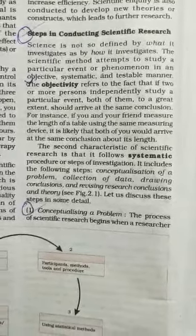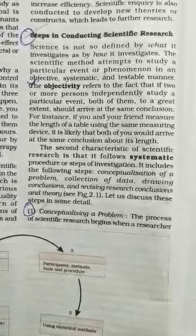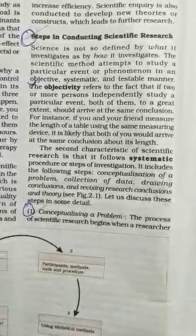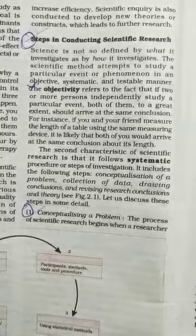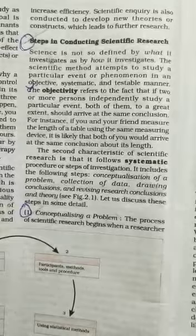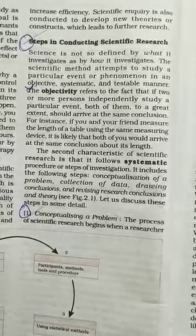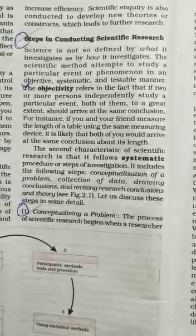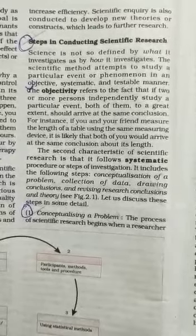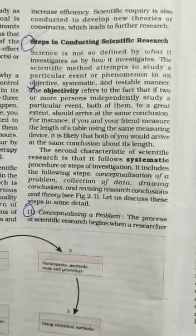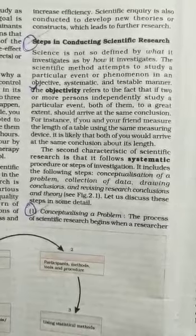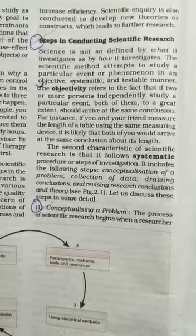Objectivity refers to the fact that if two or more persons independently study a particular event, both of them to a great extent should arrive at the same conclusion. For example, if you and your friend measure the length of a table using the same measuring device, it is likely that both of you would arrive at the same conclusion about the length.